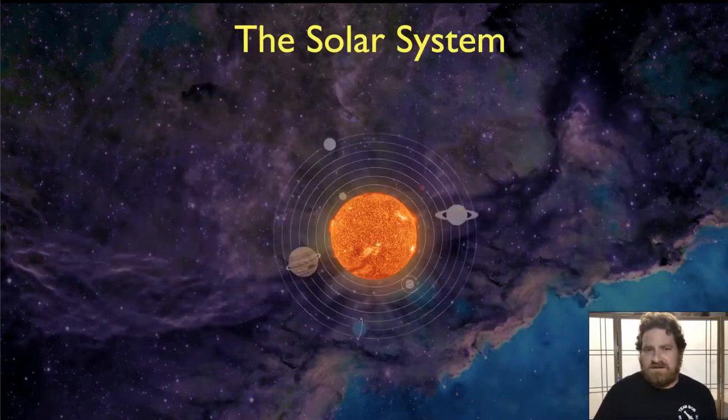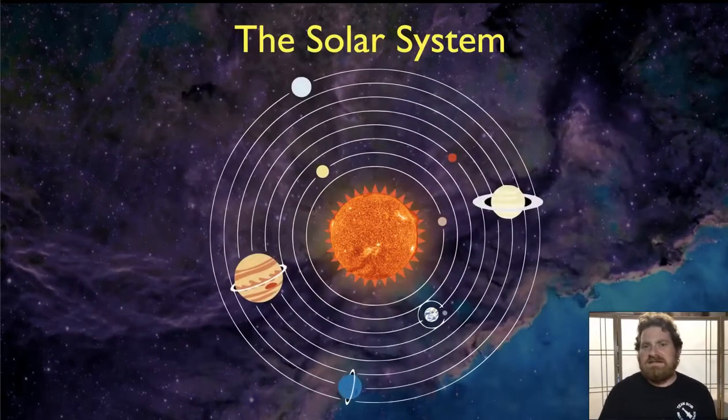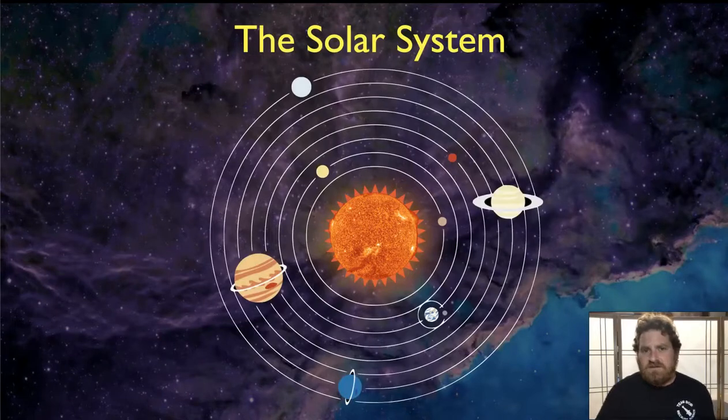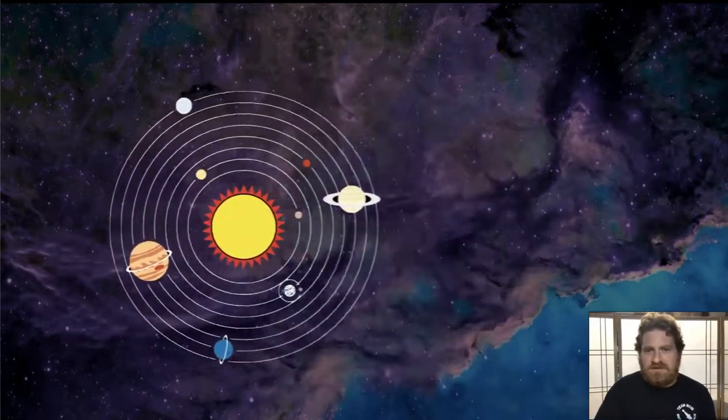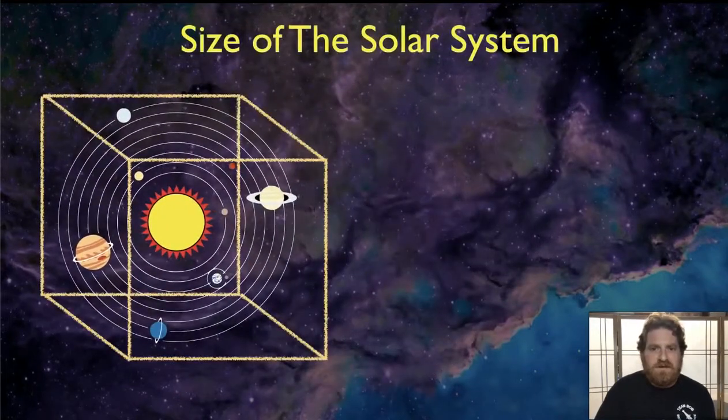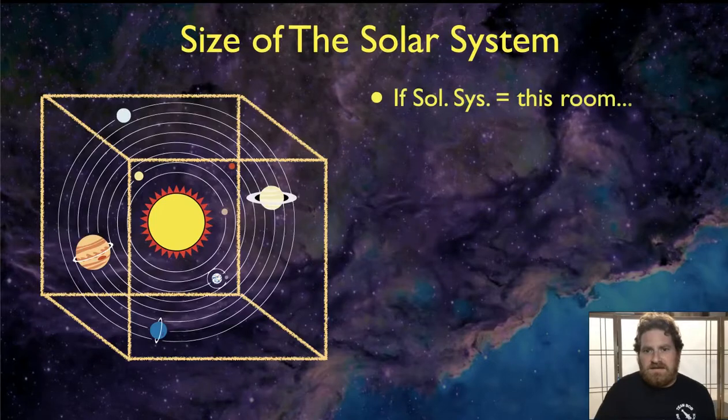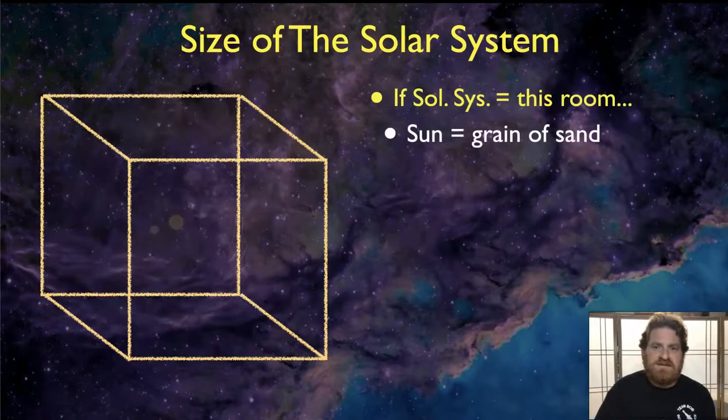If I now want to build a scale model of the solar system that fits in the classroom, I have to shrink the sun down small enough so that the orbits of all the planets can fit within the walls of that classroom. In order to do that, I would have to shrink the sun down so small that it would become the size of a single grain of sand.